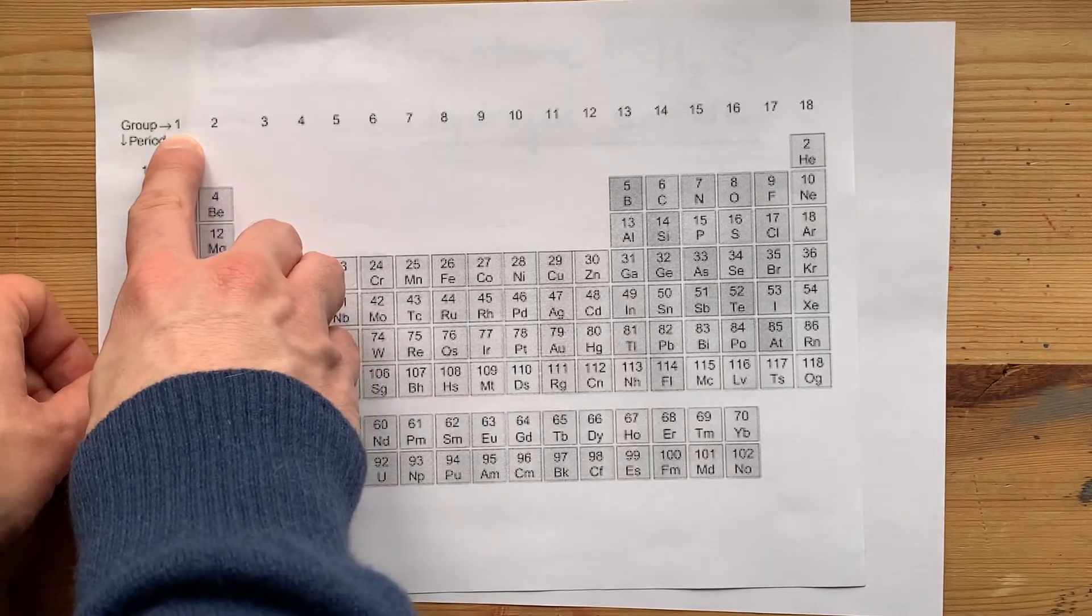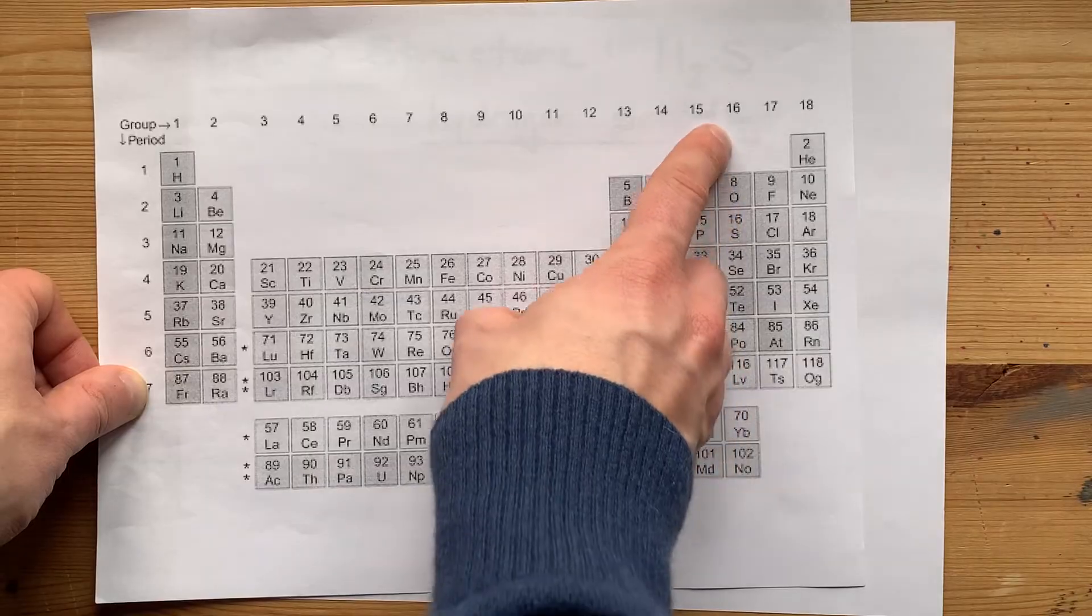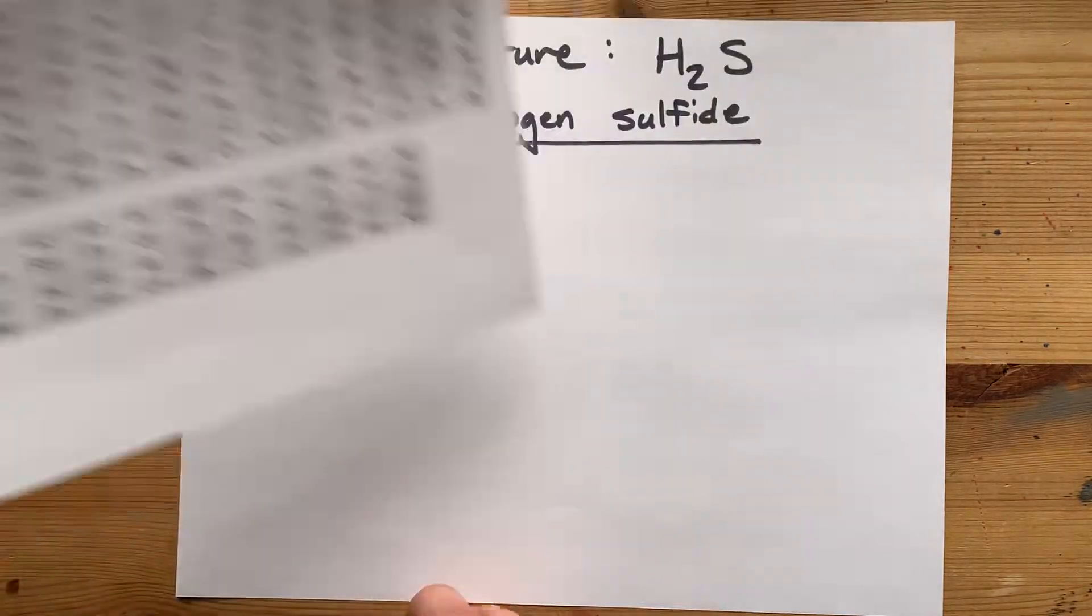Hydrogen, by the way, brings one valence electron each, and sulfur brings six valence electrons each.